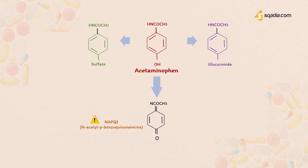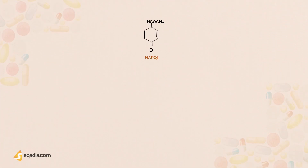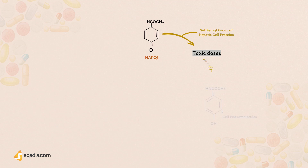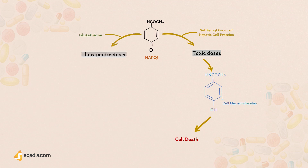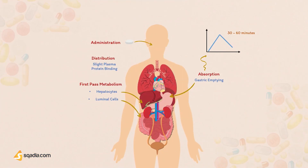At large toxic doses, NAPQI reacts with the sulfhydryl groups in hepatic cell proteins, forming a substance that causes cell death and damages the liver. At normal doses, however, NAPQI reacts with the sulfhydryl group of glutathione, ultimately forming a non-toxic substance. After metabolism, acetaminophen and all its metabolites are excreted in the urine. The half-life of acetaminophen is two to three hours and is relatively unaffected by renal function. With toxic doses or liver disease, the half-life may increase twofold or more.